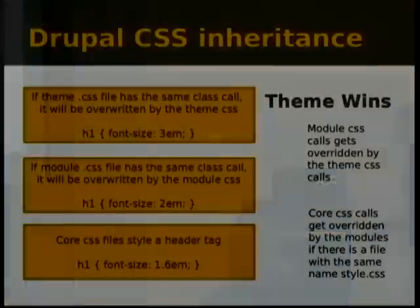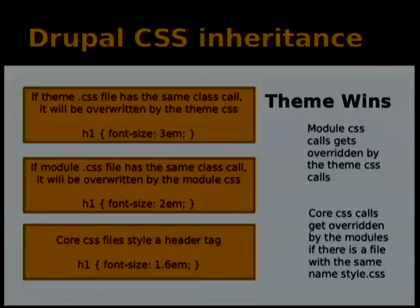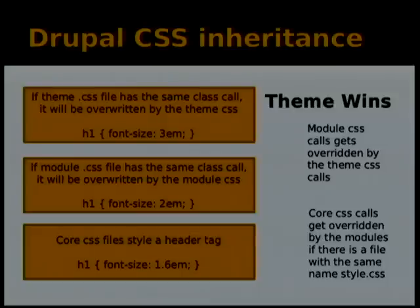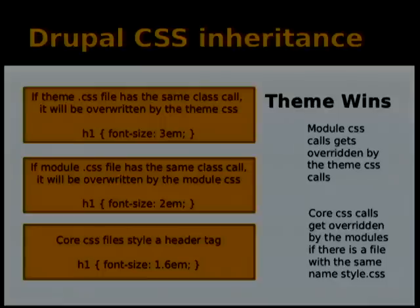What that means is: when you see a CSS call in Firebug that you want to change, you don't need to use display none. Copy that CSS call and pull it into your own folder. I normally create a CSS file called drupal-overrides.css and dump anything I'm overriding from core straight in there — for example, overriding the way template headers look.